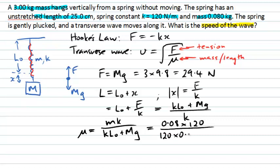plus capital M g which is 3 times 9.8 which I know is 29.4, and I do that calculation and I'll find my mass per unit length there comes out to be 0.162 and it will be in units of mass per length, kilograms per meter.